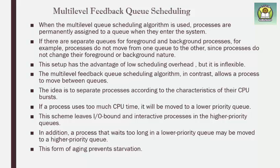In multi-level queue scheduling, processes are permanently assigned to the queue when they enter the system. There are separate queues for foreground and background processes, and the processes can never move among the queues. Each queue has its own scheduling algorithm, and there is also a scheduling algorithm between the queues.